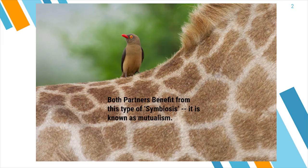Imagine life without your best friend, or even your family. Who would you hang out with and talk to about your problems? Life would be so lonely. You rely on your friends for companionship, fun, and support. Did you know that animals rely on each other, too? Some have lifelong relationships with other organisms, called symbiotic relationships. There are three different types of symbiotic relationships: mutualism, commensalism, and parasitism.